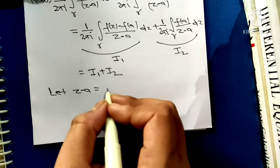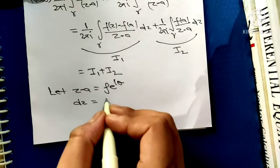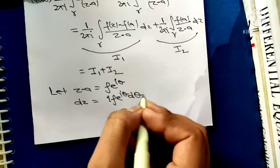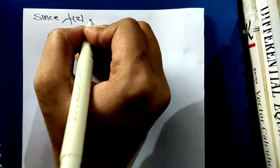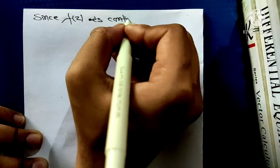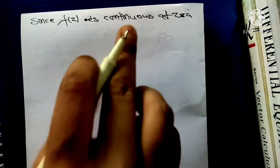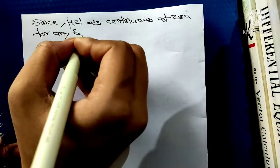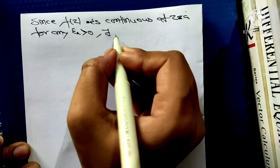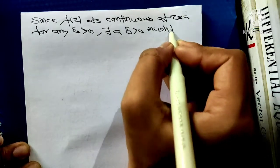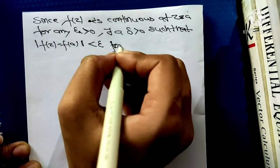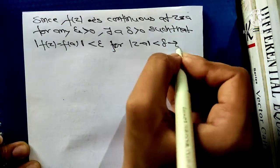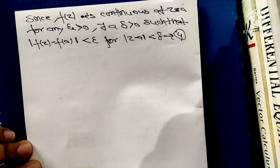Let z minus a equal ρe^(iθ), then dz equals iρe^(iθ) dθ. We will use this in the integration. Since f(z) is continuous at z equals a, which is an interior point within C, for any ε greater than 0 there exists a δ greater than 0 such that |f(z) minus f(a)| is less than ε whenever |z minus a| is less than δ — this is equation 4, the definition of a continuous function in complex analysis.